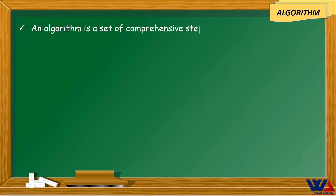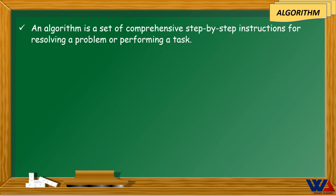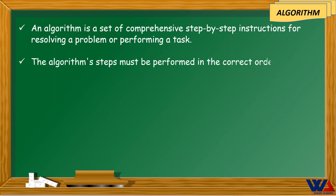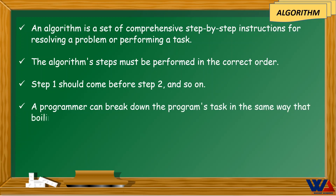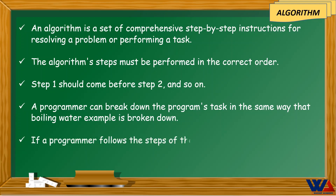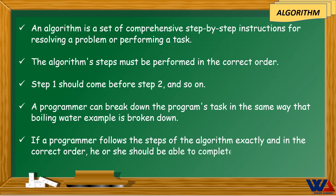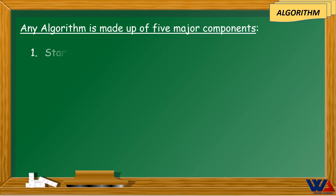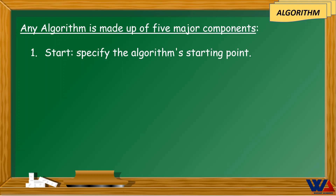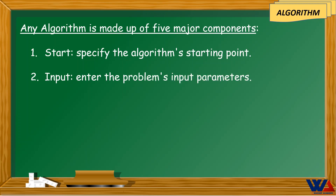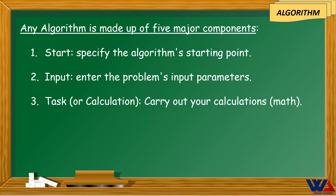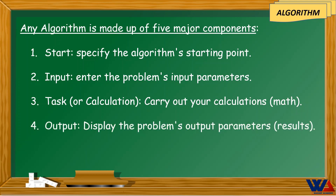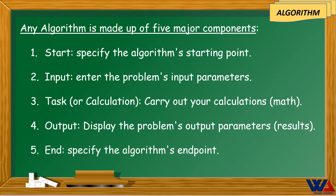An algorithm is a set of comprehensive step-by-step instructions for resolving a problem or performing a task. The algorithm steps must be performed in the correct order. Any algorithm is made up of five major components: 1. Start — specify the algorithm's starting point. 2. Input — enter the problem's input parameters. 3. Task or calculation — carry out your calculations. 4. Output — display the problem's results. 5. End — specify the algorithm's endpoint.